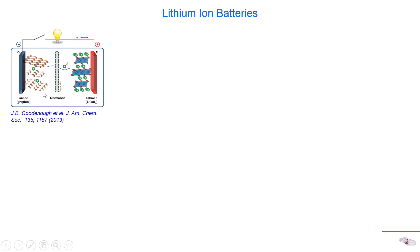Here I show you the design of the conventional rocking chair lithium-ion battery, where you have a cathode on one side, the anode on the other side, an electrolyte wall for lithium ions to conduct, and usually a separator to physically separate the anode from the cathode in order to limit the possibility of self-shorting.